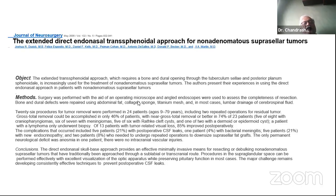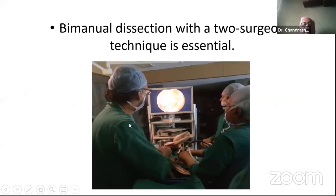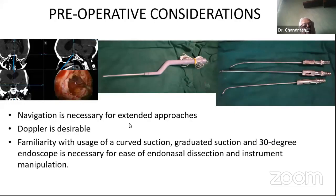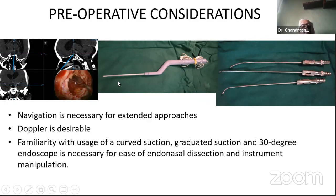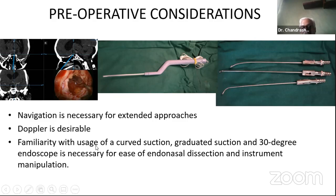To remove bigger tumors in the suprasellar region, you need extended approaches. Initial reports about extended approaches started coming around 2005, and we started doing that in 2006. Bimanual dissection with a two-surgeon technique is absolutely essential for this. I am fortunate to have Dr. Nishit Shah as a dedicated colleague. For extended or proper skull-based surgery, you need to use navigation more often than for usual pituitary surgery, an insonating Doppler, and suctions and curettes curved in various ways to use depending on the angle afforded by the exposure at that particular time.